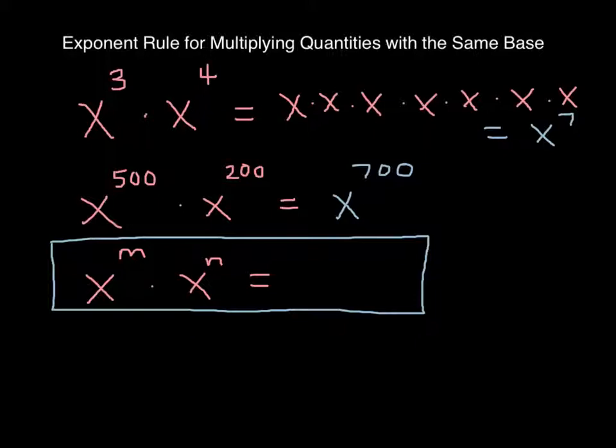As you can see, for any problem that has x to some power times x again to some power, the number of x's that would end up in that product would be as many as m plus n together. So the way we write the rule is x to the m times x to the n power is equal to x to the m plus n. And that is your first rule of exponents.